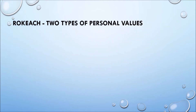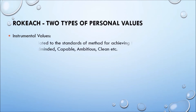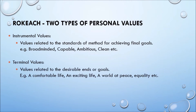Rokeach identified two types of personal values. Instrumental values are related to the standards or methods for achieving final goals — for example: broad-minded, capable, ambitious, clean. Terminal values are related to desirable ends or goals — for example: a comfortable life, an exciting life, a world at peace, equality.